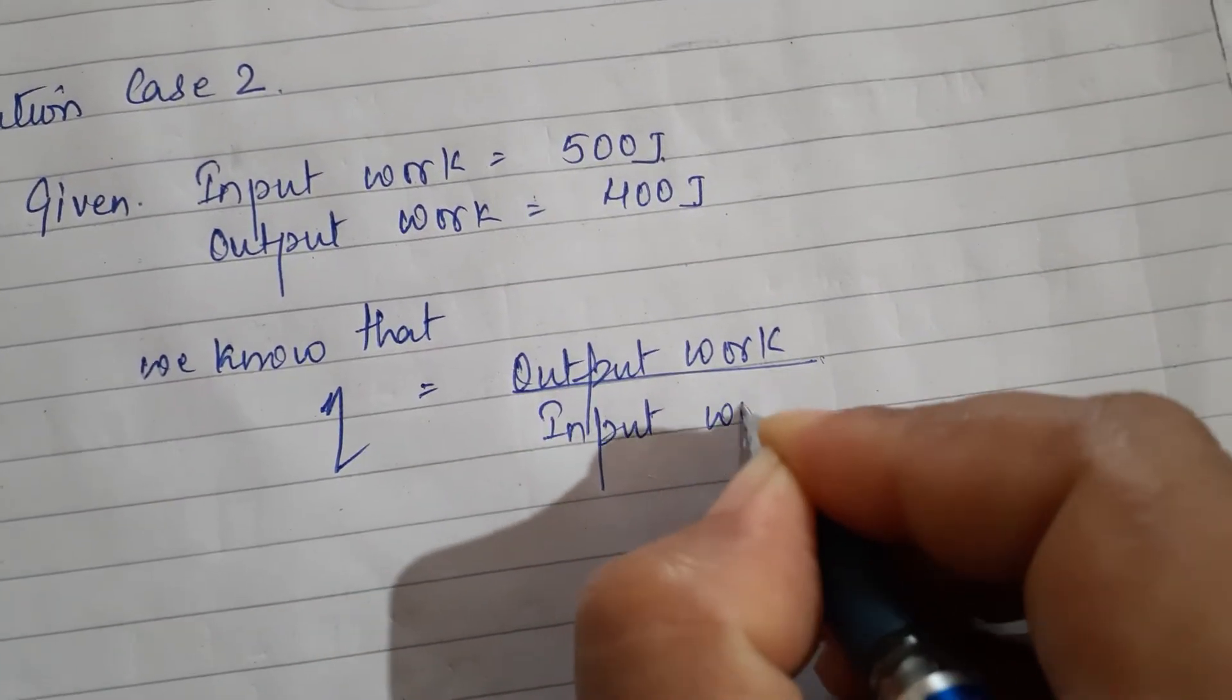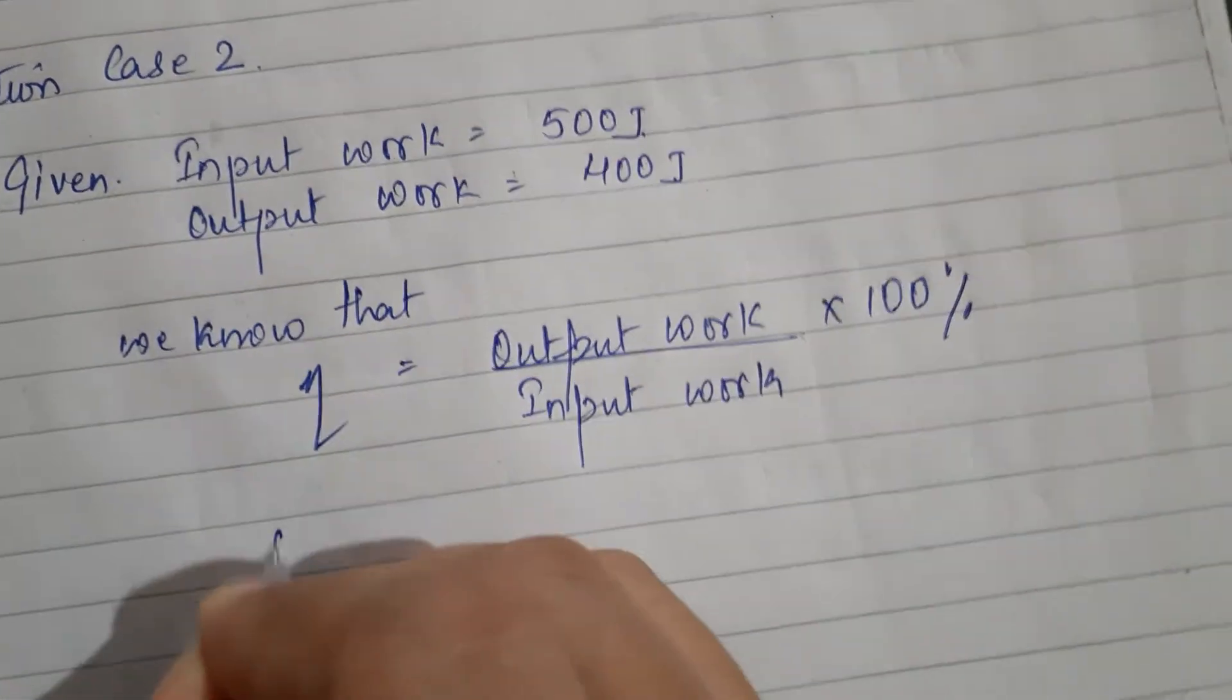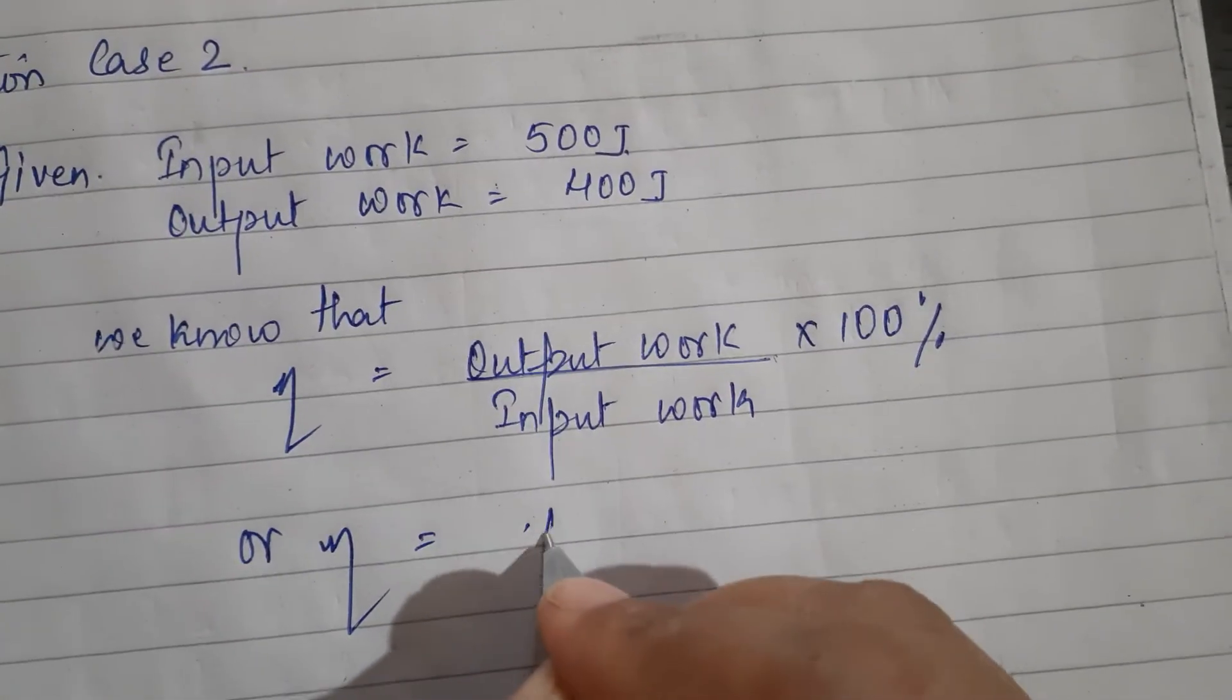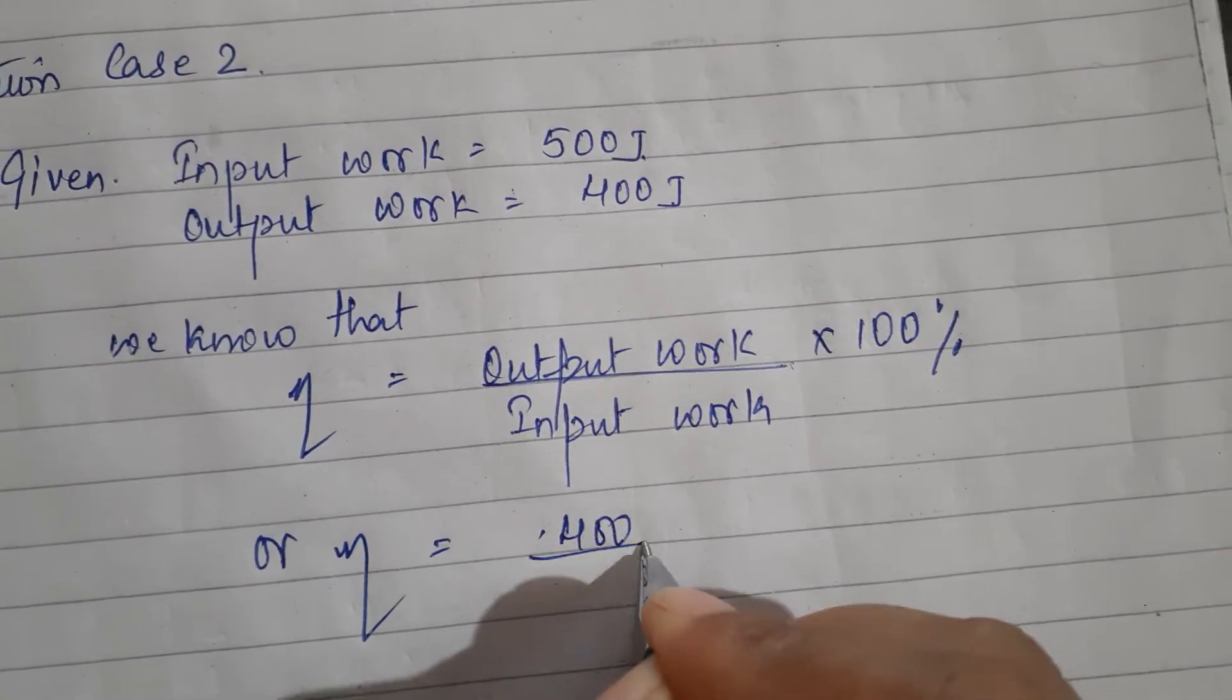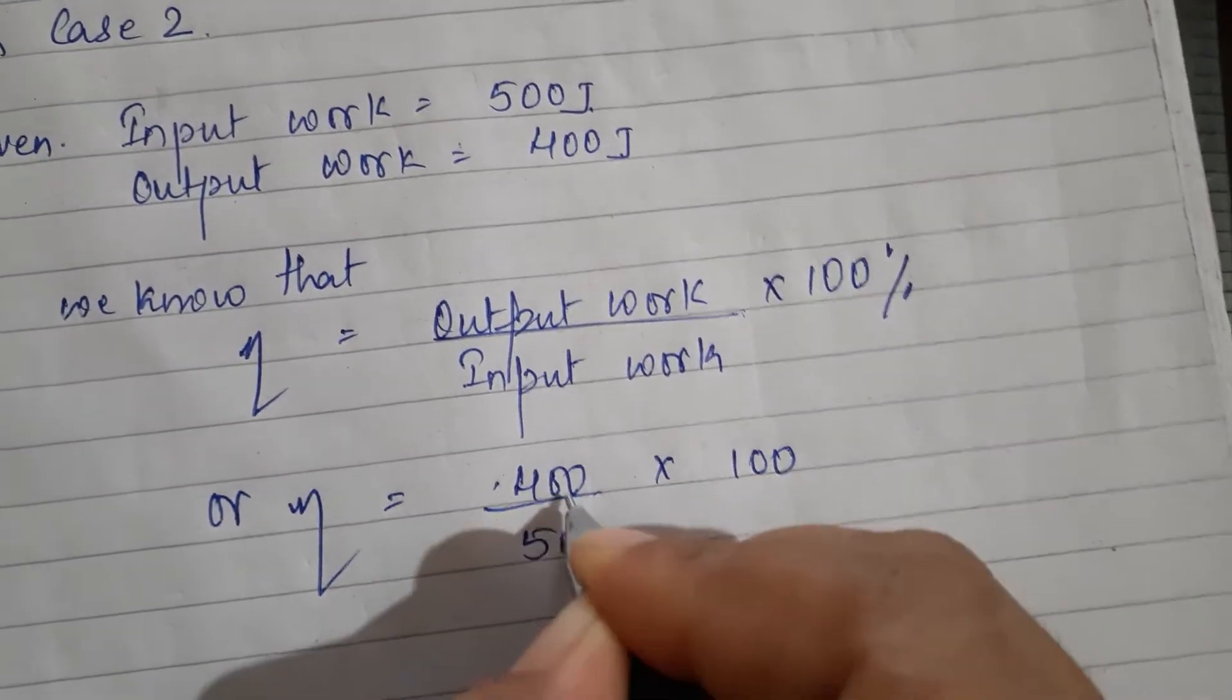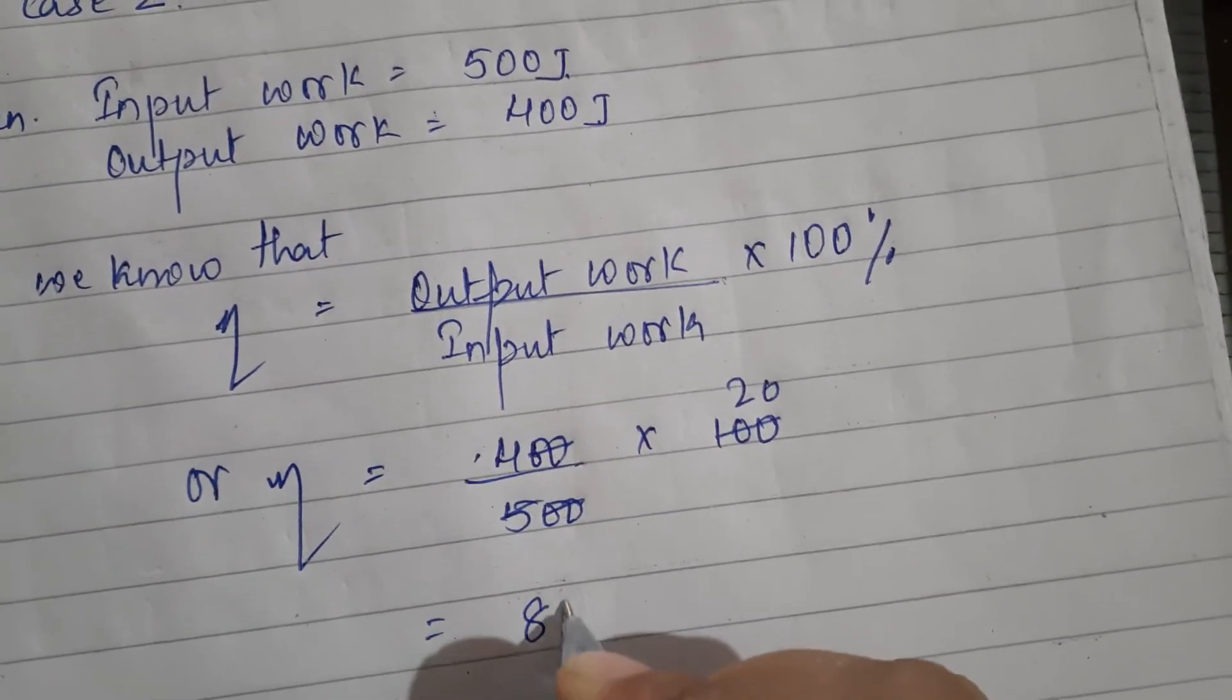Efficiency is output work into input work into hundred percent. Or efficiency is, output is how much? It is 400, and input is how much? It is 500 into hundred percent. So when we cut the zeros, we get 80 percent.